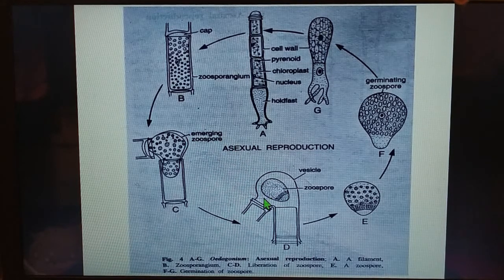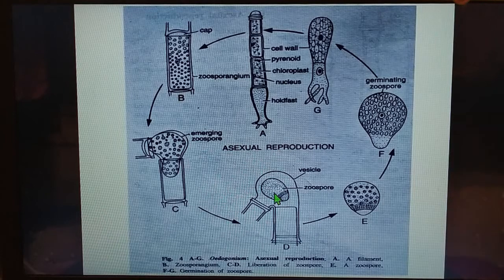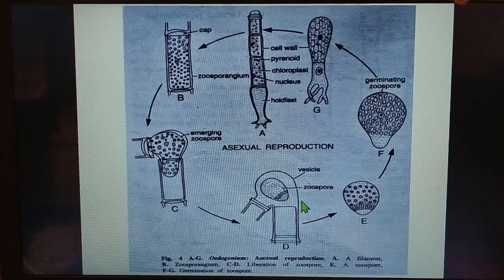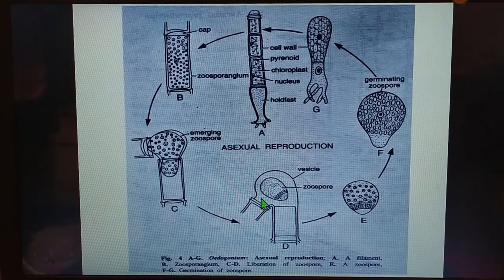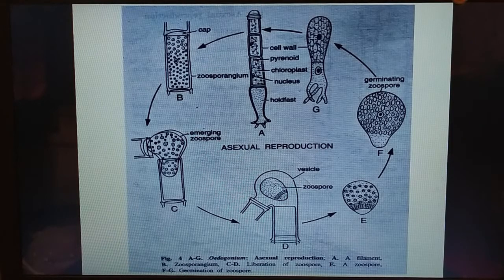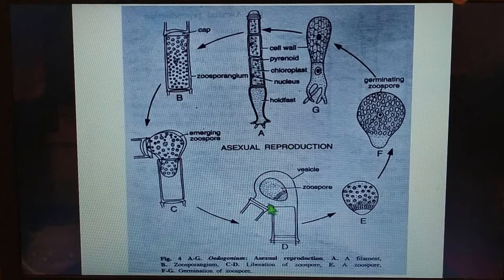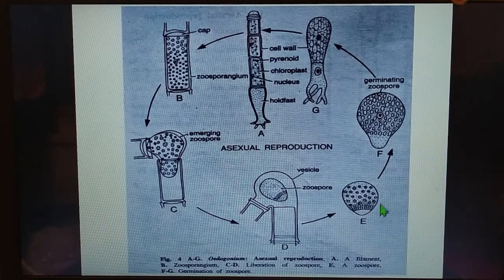The mucilaginous substance aids in the extrusion of the zoospore after absorbing water. The zoospore comes out of the zoosporangium enclosed in a delicate mucilaginous vesicle — an air-filled swelling. This vesicle soon dissolves and the zoospore is liberated.